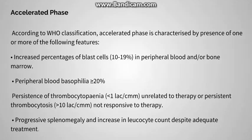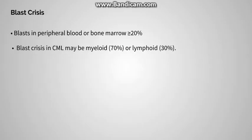In the chronic phase of CML, because cells are not properly matured, the NAP score is decreased or absent. In contrast, in leukemoid reaction due to infections, the NAP score is increased — allowing differential diagnosis. In the accelerated phase, according to WHO classification, any one or more of the following findings labels the stage as accelerated phase: blast percentage of 10–19%, basophilia greater than 20%, thrombocytopenia unresponsive to therapy, persistent thrombocytosis unresponsive to therapy, progressive splenomegaly, or increasing TLC despite adequate treatment.